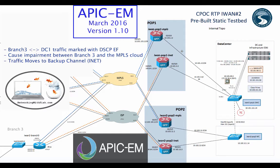Welcome to a little bit of lab rat fun networking with Phish. What we're going to do today in our next APICM iWAN app version 1.10 YouTube is use our traffic. We're going to have branch three with bi-directional traffic using Spirent Test Center going between branch three and data center one. I'm going to mark the traffic with DSCP EF in both directions, cause impairment between branch three and the MPLS cloud, and then see how the traffic moves over to the backup channel.